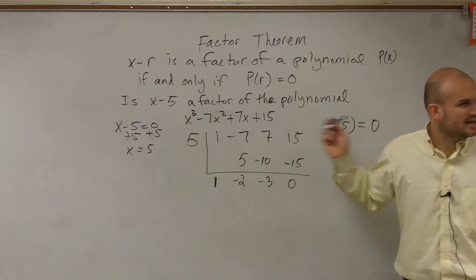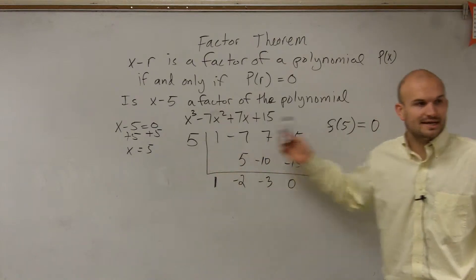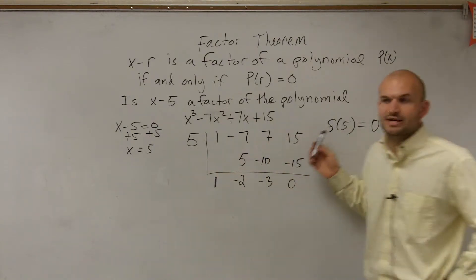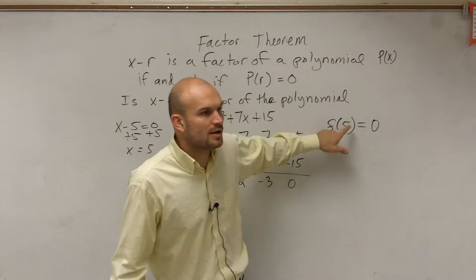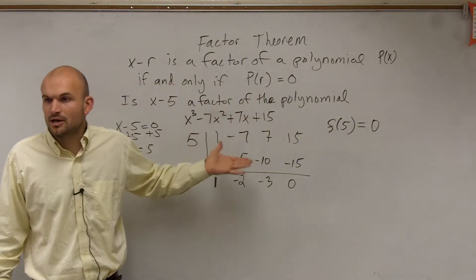Because we showed in other examples that when using synthetic division and then plugging in that same term into your function, you're going to get the same value. So therefore, since we know when we plug f of 5 in we get 0, we now know that this is going to be a factor of the polynomial.